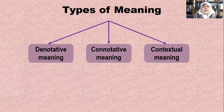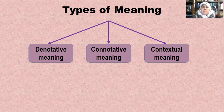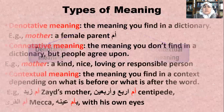Here we have the types of meaning. There are three main types of meaning: the denotative meaning, the connotative meaning, and the contextual meaning. Identifying each of these is very necessary for the process of translation.